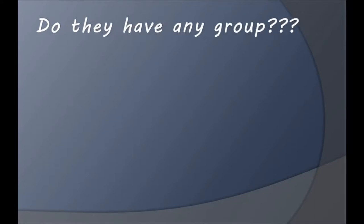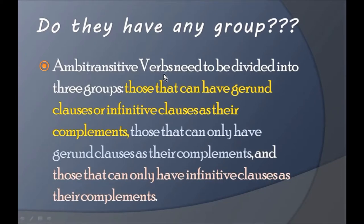Do ambitransitive verbs have any subgroups? Yes — ambitransitive verbs can be divided into three groups: those that can have gerund clauses or infinitive clauses as their complements, and those that can only have gerund clauses as their complements.